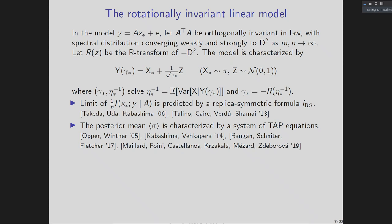The posterior mean can be characterized by TAP-type mean field equations, with many different derivations in the literature. One is the expectation consistency framework of Oprah and Winter, applied by Kabashima and Vekapara. Another uses vector AMP iterations developed by Rangan, Schneider, and Fletcher. A particularly useful paper I learned from was Maillard, Foyini, Castanelos, Kazakala, Mezard, and Devarova in 2019 (Journal of Statistical Mechanics), which connected these different frameworks and showed these equations can also be derived by extending the high-temperature expansion approach of Parisi-Potters.